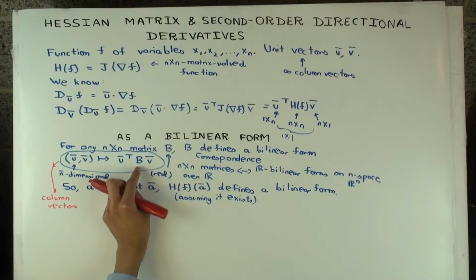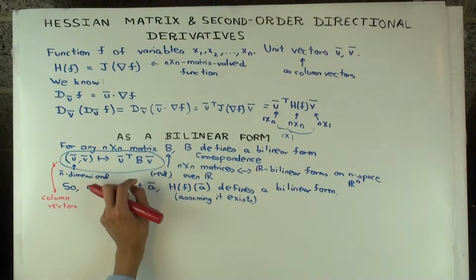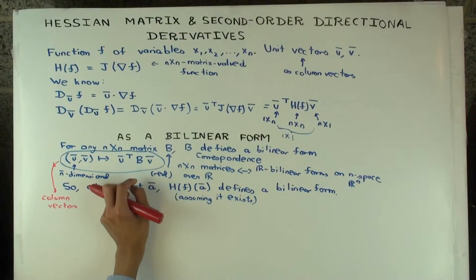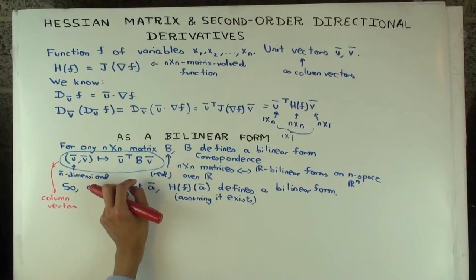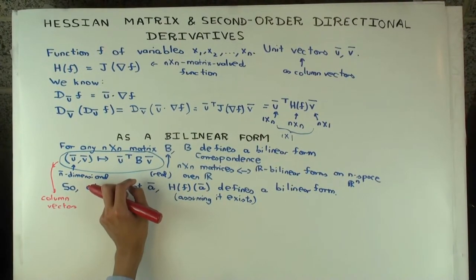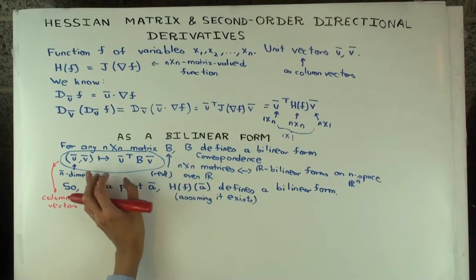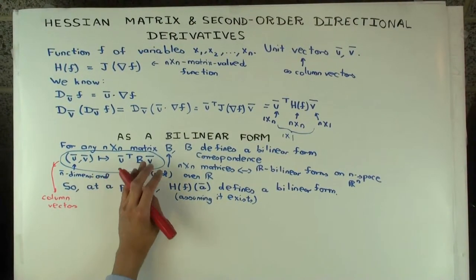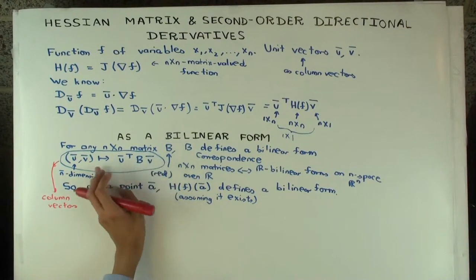So what bilinear form actually is, is it's a map which takes in two vectors and gives a number. And it satisfies some conditions, satisfies what's called bilinearity. I won't go into those conditions, but any matrix B, like this, defines a bilinear form.